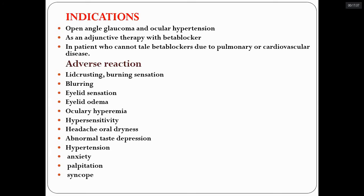Brimonidine is used in patients who cannot tolerate beta blockers due to pulmonary or cardiovascular disease. Beta blockers are the drug of choice in developing countries as they are cheaper and widely available, but in patients where beta blockers are contraindicated, brimonidine is used. Side effects include lid crusting, burning sensation, blurring of vision, eyelid sensation and irritation, eyelid edema, and ocular hyperemia. Due to many hypersensitivity reactions, not all patients can tolerate this drug.